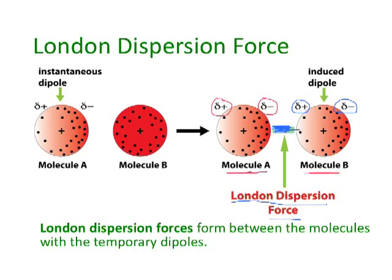You need to recognize that this is going to be extremely weak. Because the electrons are constantly moving, these dipoles will form and then collapse and then reform and collapse again. So this London dispersion force is only going to be there for an instant, because the dipoles themselves are temporary — they keep forming and breaking apart. This is why London dispersion forces are the weakest type of intermolecular force.